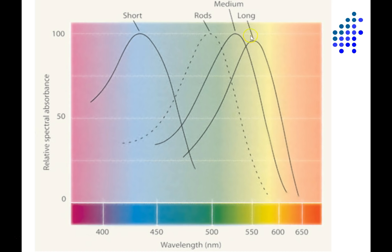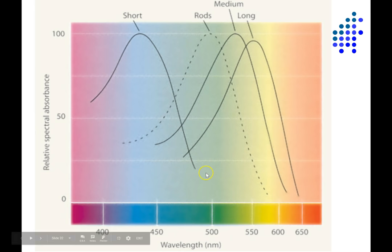So you could see how the ratio of activity — the relative activity of each of these three cone types — kind of tells you where you are along the visible spectrum. The closer you are to the shorter wavelengths, the more the short cone is active. Medium wavelengths activate mostly the medium wavelength cone, and long wavelengths activate mainly the long wavelength cones.